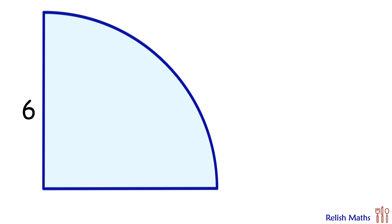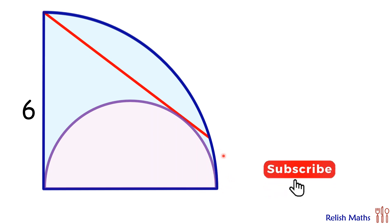Hello, welcome to the channel. In today's question we have a quadrant with radius 6 centimeters. Inside it we are drawing a semicircle and we are drawing a tangent from this point to the semicircle. If the length of the tangent is X, then the question is find the value of X.